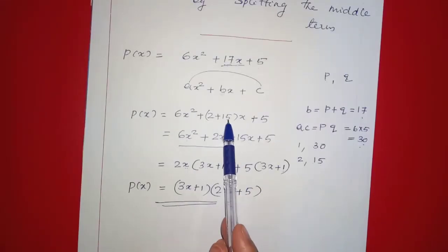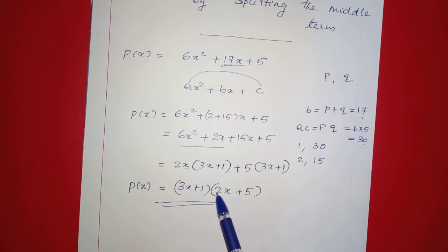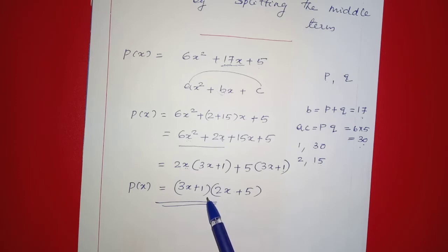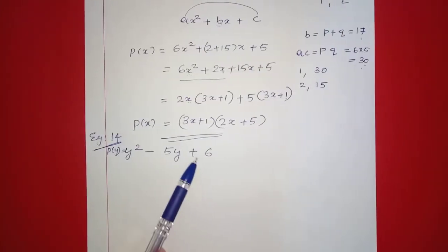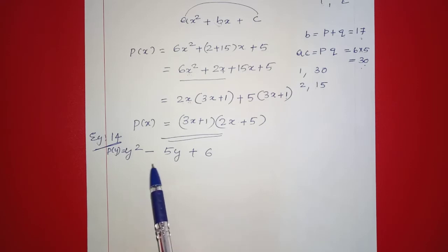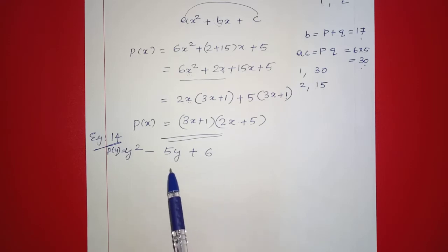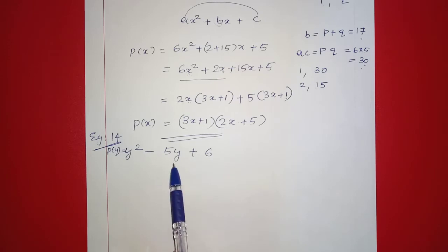If you have a quadratic polynomial, we find a product equal to the first times last term coefficient, and two numbers that add to give the middle term coefficient. Let's take another example — example 14.